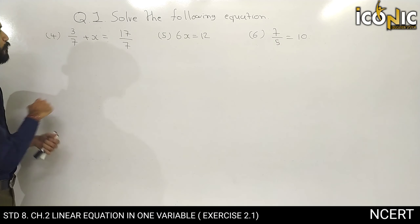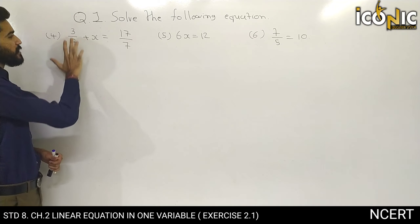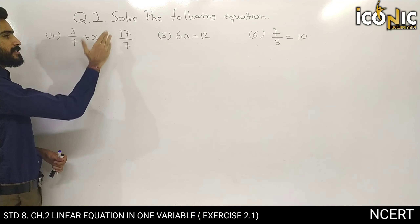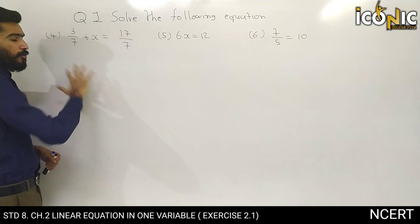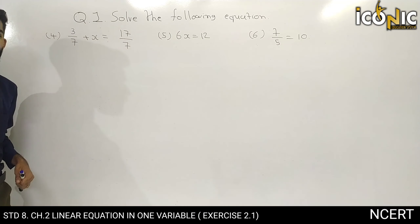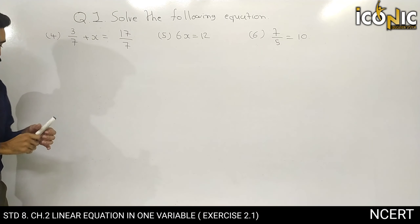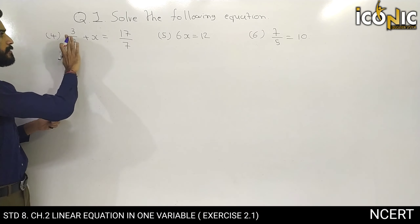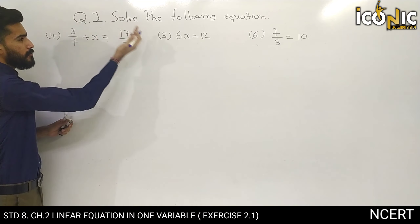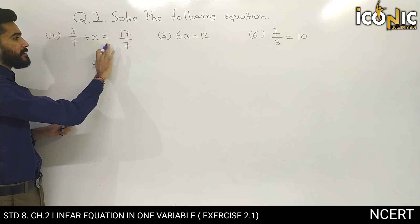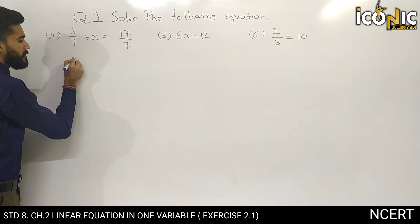This is our fourth example. In this question we have 3 by 7 plus x is equal to 17 by 7. We have to find the answer for x. We will transpose the 3 by 7 to the other side.